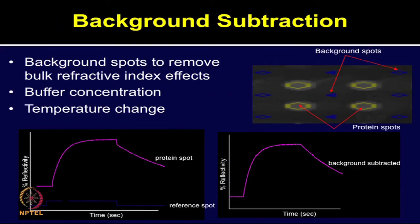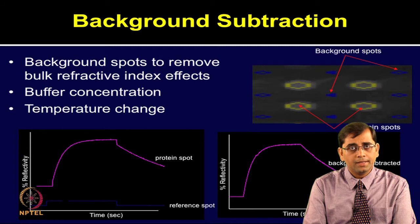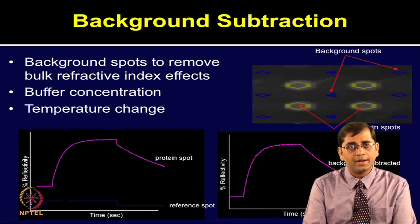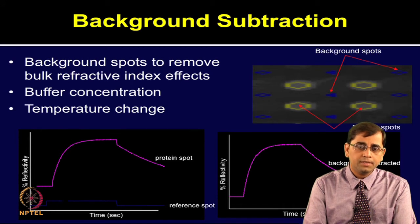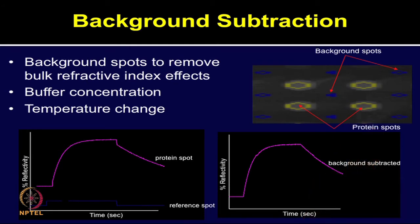The background spots are used to remove the bulk refractive index effects. There are spots of interest and four software-generated background spots. The panel at the top in the slide shows the protein spots with signal, and the blue one represents the reference spot signal. In the graph below, the X axis represents time in seconds and Y axis shows percentage reflectivity. The left-hand side graph shows the non-subtracted curve. When we subtract the reference spot intensity from the protein signal, a background-subtracted signal image is generated, shown in the right-hand side graph.